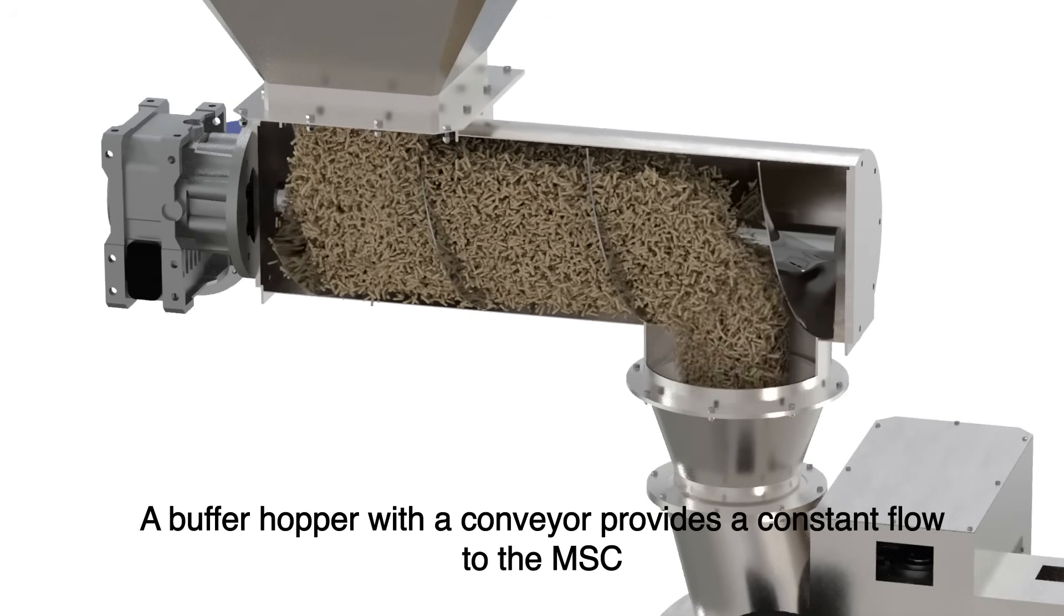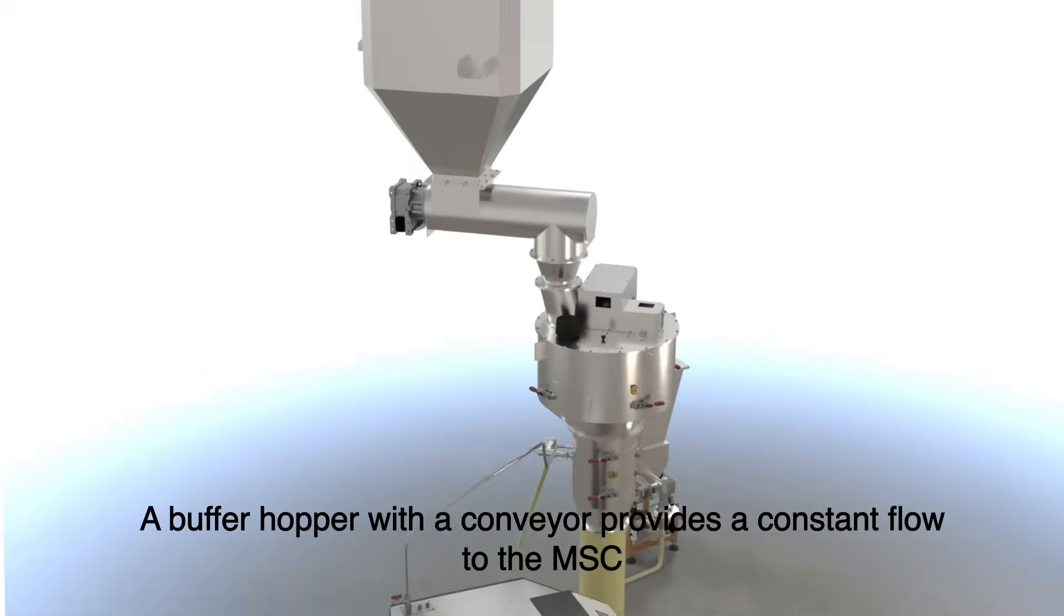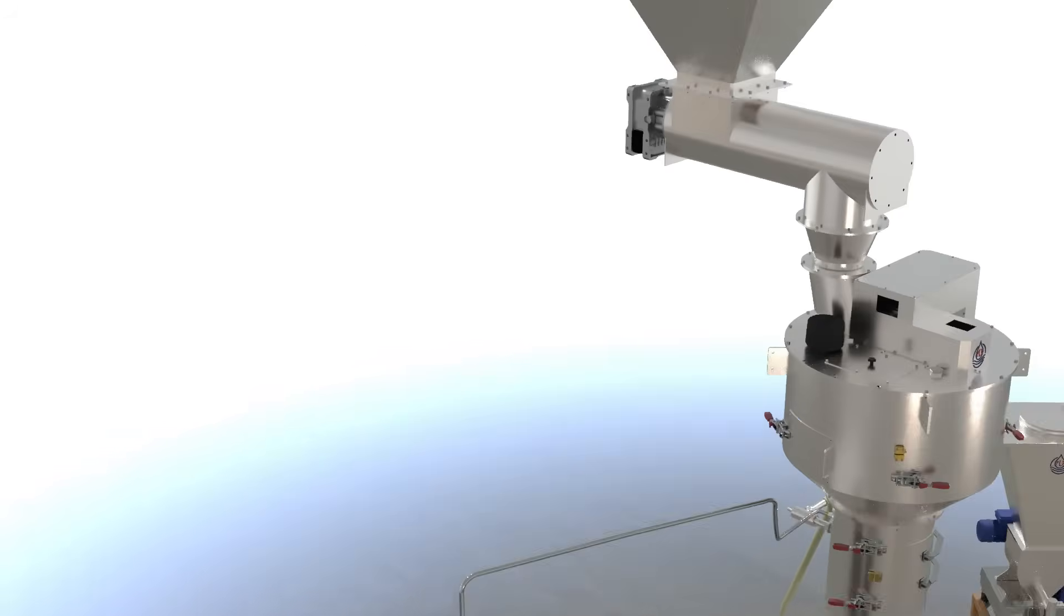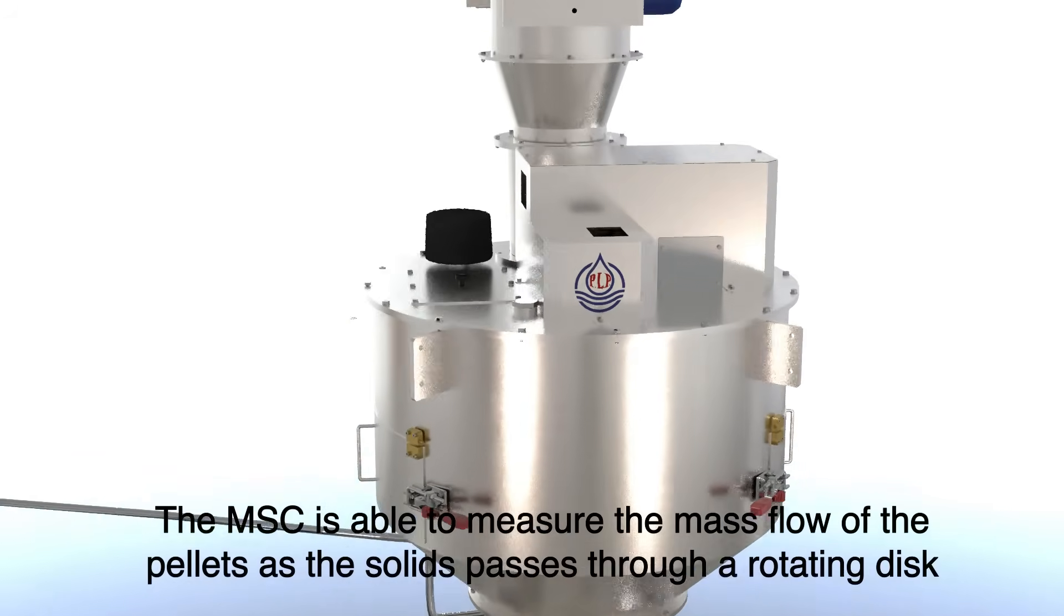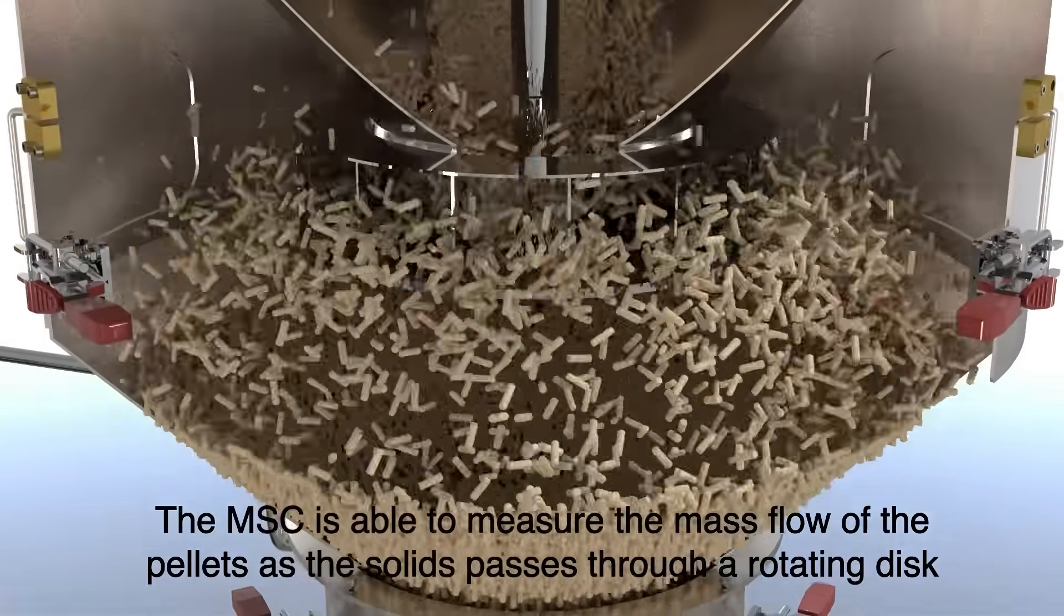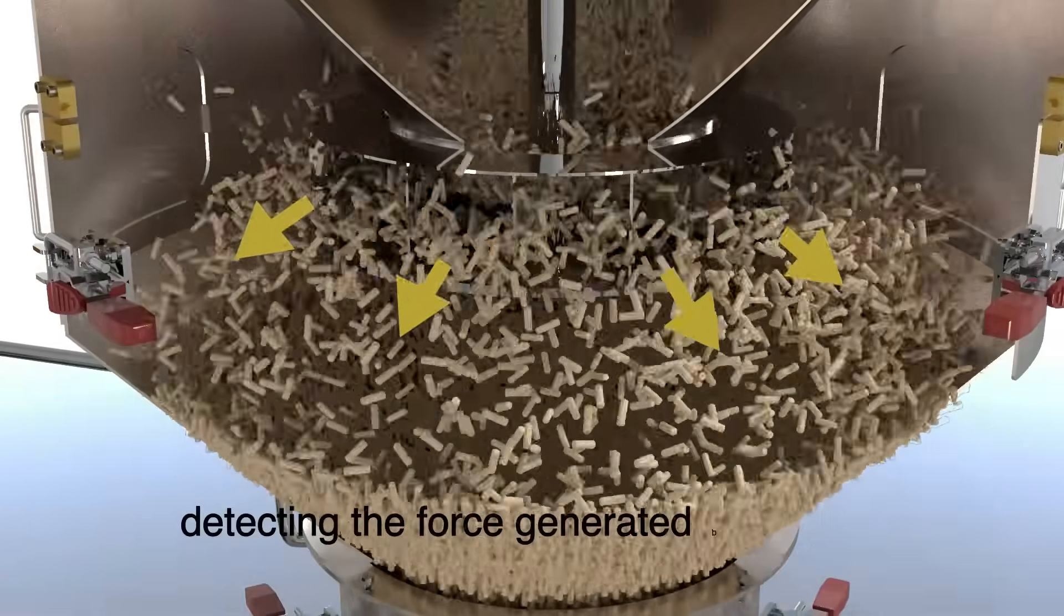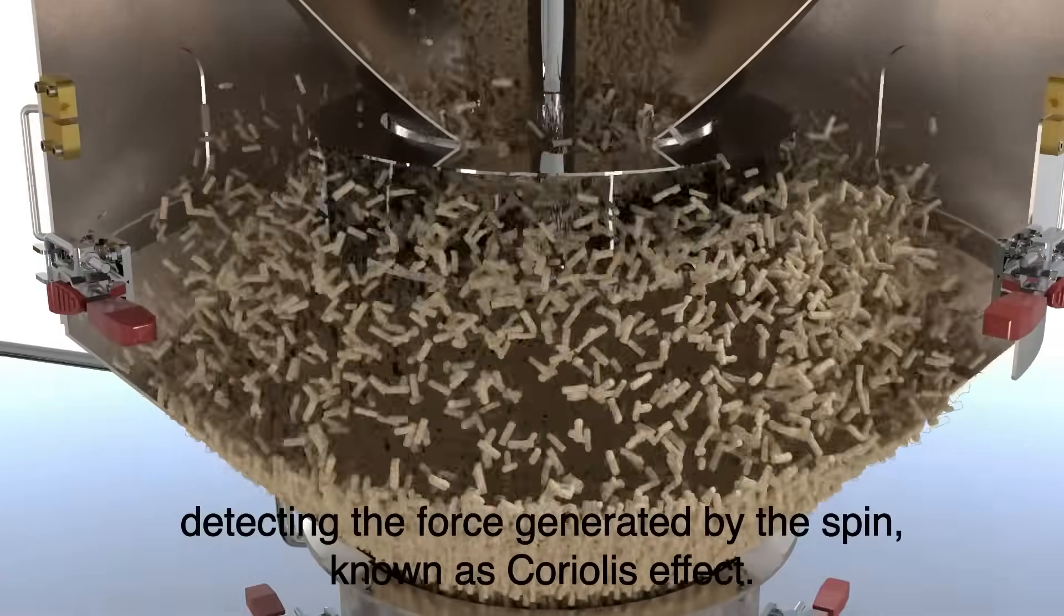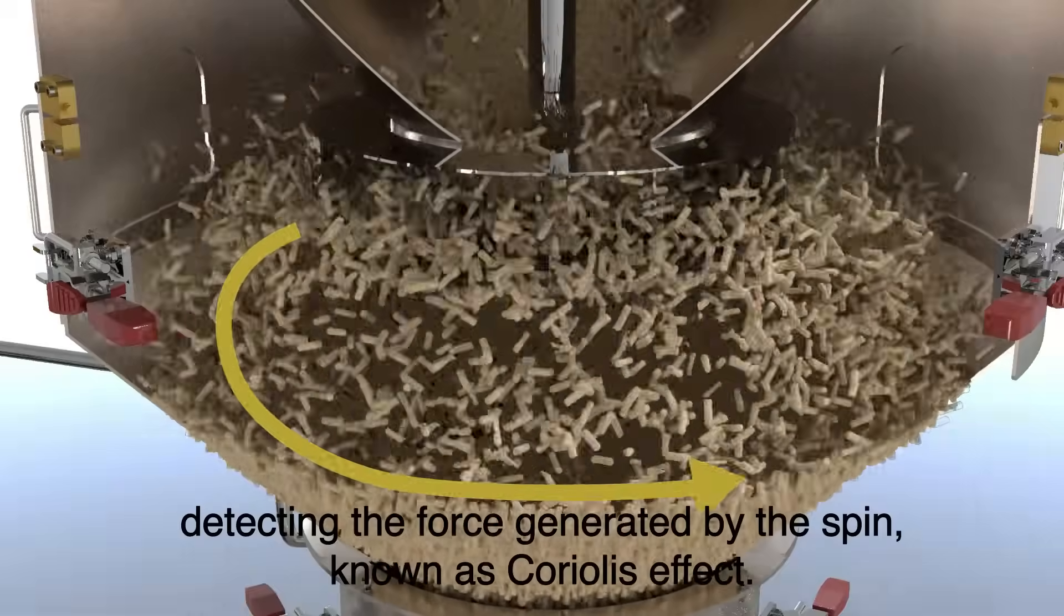A buffer hopper with a conveyor provides a constant flow to the MSC. The MSC is able to measure the mass flow of the pellets as the solids pass through a rotating disk, detecting the force generated by the spin, known as Coriolis effect.